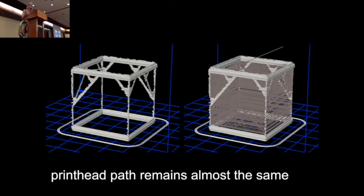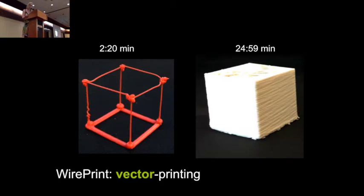We found that the main reason for this is that the path for the print head actually remains almost the same. Since the material is printed layer-wise, the print head actually has to traverse the entire cube outline, has to move from corner to corner bottom up, which makes it very slow. In the next step, we actually printed the cube by extruding the edges vertically, by moving the print head up and down. And it turns out that vector printing is really much faster than layer-wise printing. In this case it was 11 times faster.